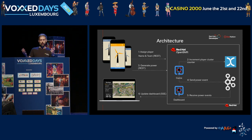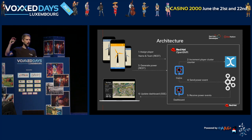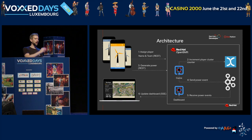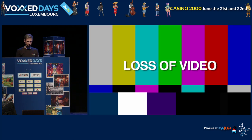Every time you tap, you create a REST request that the application receives. It puts it into a Kafka topic, and then I read it on my dashboard. I'll read all these events, and that's how we make the cars move. Hopefully the QR code still works — I tested it a little bit ago.